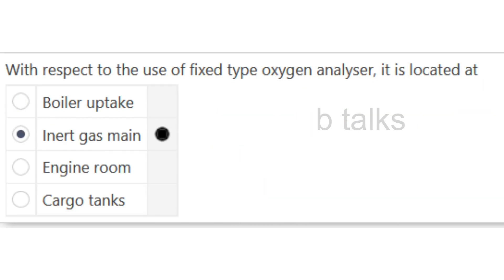With respect to the use of a fixed type oxygen analyzer, it is located at: Boiler uptake, Inert gas main, Engine room, or Cargo tanks? Answer: Inert gas main.